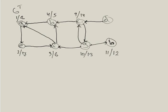D starts at time fifteen. We've already been to C, so we can't go there, and that's the only edge from D, so D finishes at time sixteen. Now we have completed the DFS on the transpose of the original graph.